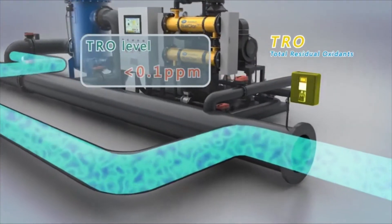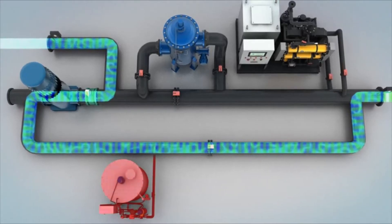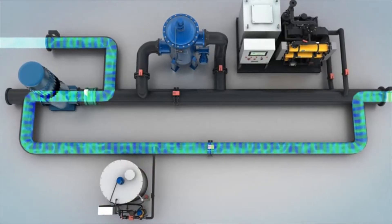If TRO concentration is lower than 0.1 ppm, ballast water will be discharged to the sea directly and system will not be operated.